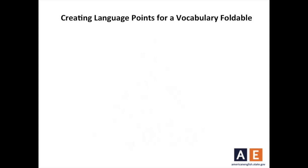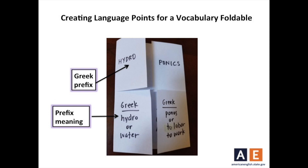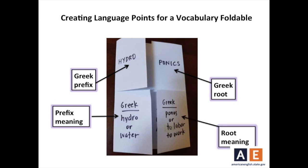If you recall, the prefix hydro means water. You can write the word hydro on the upper left-hand corner of the mini-book. Underneath hydro, you can write the definition of hydro, where the word came from — Greek — and what it means in English: water. Then, on the upper right-hand corner, you can write ponics. Underneath ponics, you can write ponos, which means to labor or to work. You can also write Greek, because that's where the root word came from.